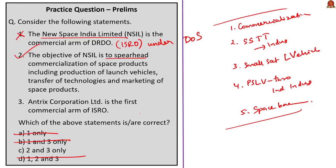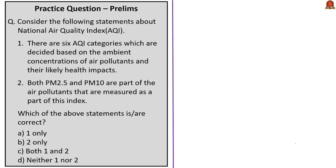The third statement: Antrix Corporation Limited is the first commercial arm of ISRO — correct. It is also a fully owned Government of India company under the administrative control of the Department of Space, established in September 1992. Statements two and three are correct — the answer is option C: two and three only.